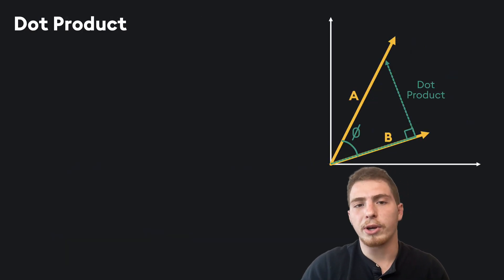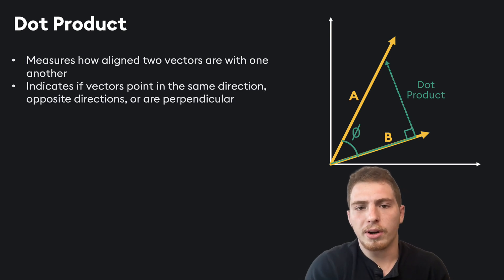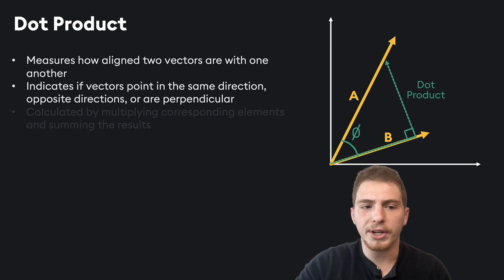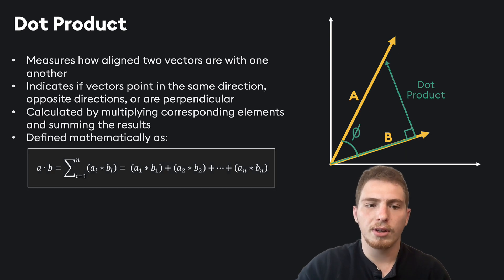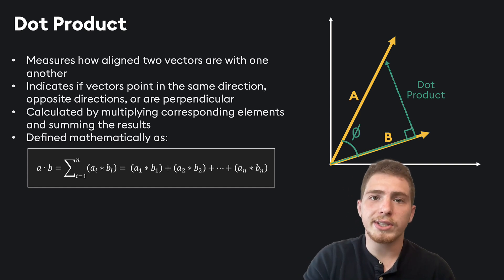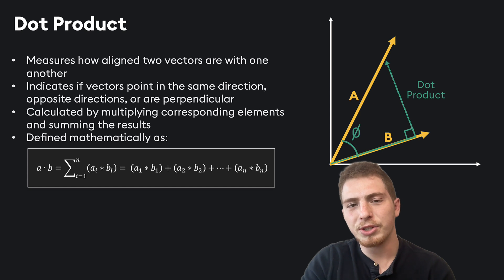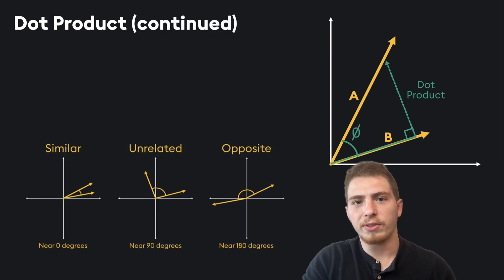Dot product is a similarity metric that looks at how aligned two vectors are. You can use dot product to figure out whether vectors are pointing in the same direction, opposite directions, or are perpendicular. It's calculated by multiplying the corresponding elements and then summing the results, defined mathematically by going element by element, multiplying and summing. There's also another way to calculate the dot product: take the magnitude of the vectors and multiply that by the cosine of the angle between them. In general, if the angle between them is very small, they're going to be similar.